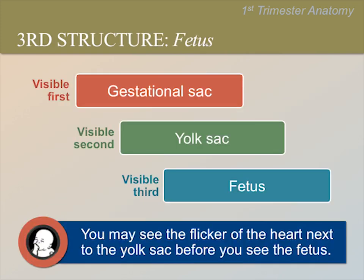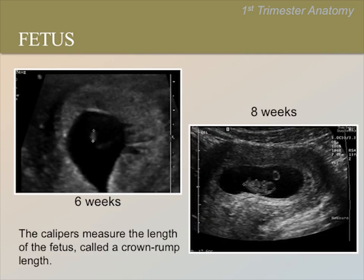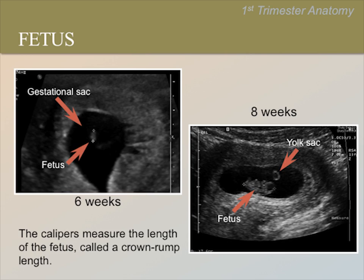After the yolk sac, the next structure you will see is the fetus. You may actually see the flicker of the fetal heart beating next to the yolk sac before you see the fetus. This occurs around 6 weeks gestational age. The image on the left is taken at 6 weeks gestation — here you can see the gestational sac and the fetus. The right image is taken at 8 weeks gestation, where we can see the fetus and yolk sac together. Now we have labeled the structures. As the fetus grows, the yolk sac is no longer visible. Note that the calipers measure the length of the fetus in the right image, which is called a crown rump length.